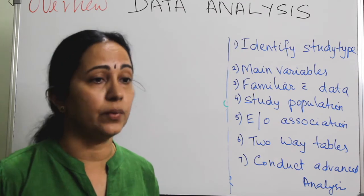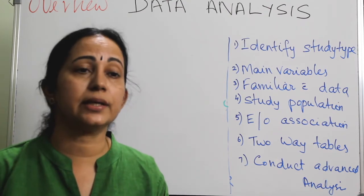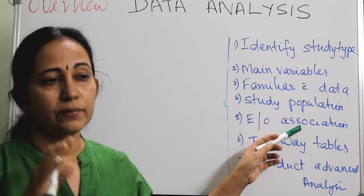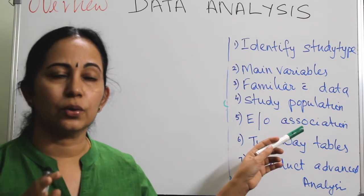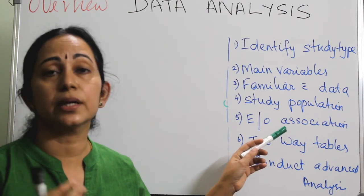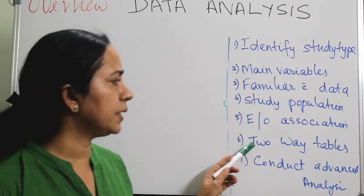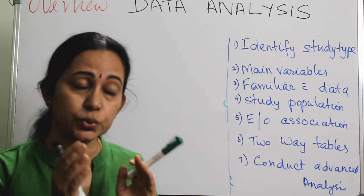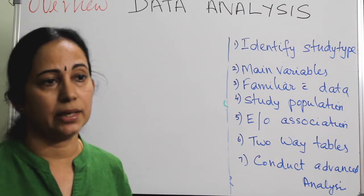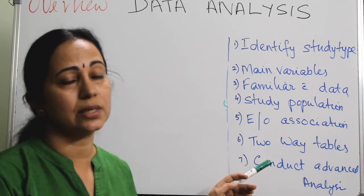You should know the study population very well: the baseline characteristics and demographic details. If there are two groups for an analytical study, you should know that also. Then understand the exposure and outcome association — you can get that knowledge by looking at a priori hypotheses, previous studies, or your own study design. Make two-way empty tables if needed, as they make data analysis easier. These two-way tables are used with cross-sectional, case-control, and cohort studies.